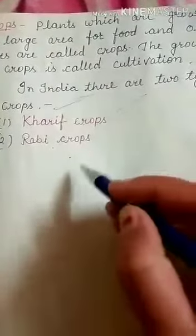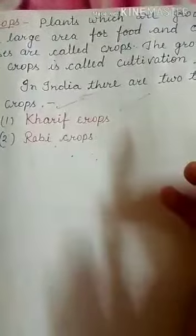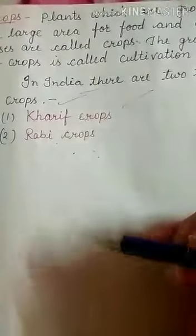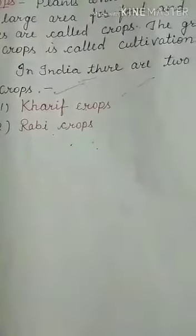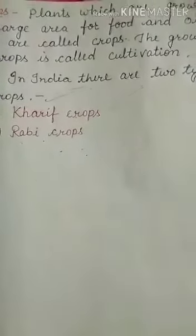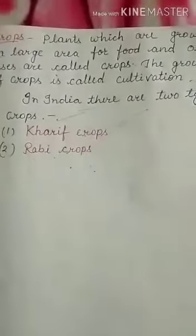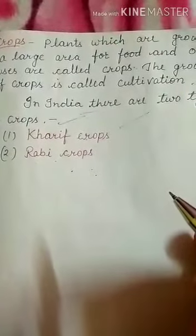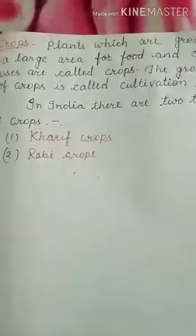The next type is Rabi crops — winter crops. Some Rabi crops are wheat, gram, barley, radish, turnip, carrot, pea, mustard, cauliflower, and cabbage. These vegetables grow well in winter. I hope all students understood. Thank you.